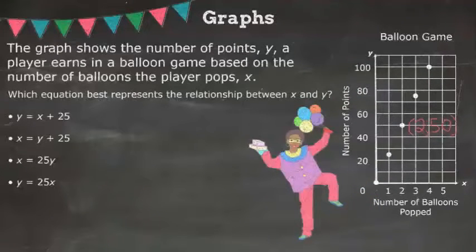Let's take a point on the graph. We can take any, but let's take this one: 2, 50. The x value is 2, and the y value is 50. So let's plug it in and see which equation is correct.